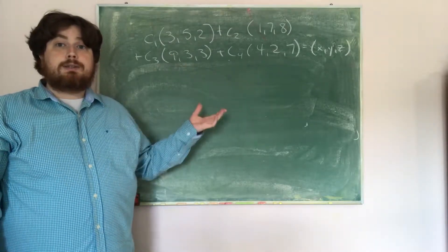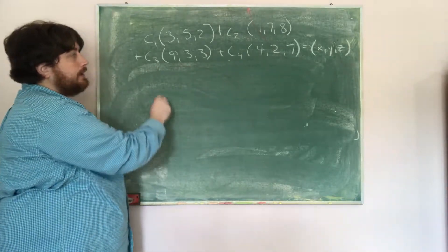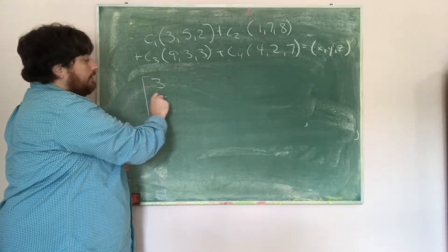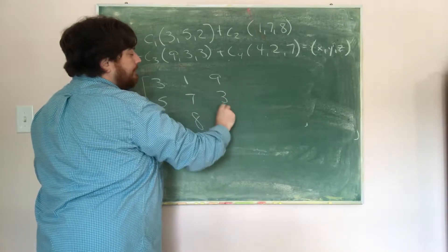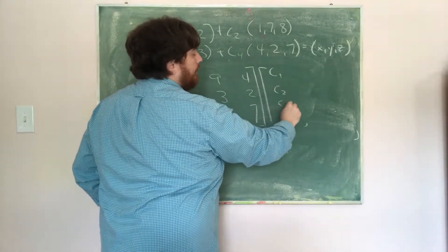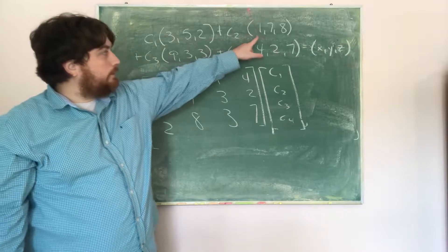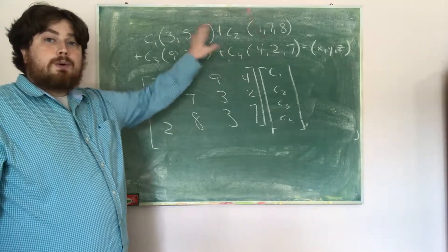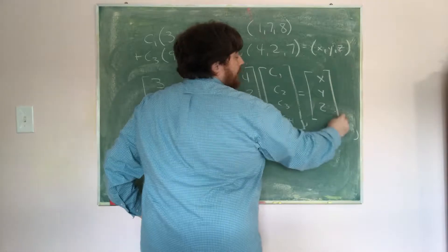So if we take this equation and turn it into a matrix equation, we turn these vectors into column matrices: the columns are (3, 5, 2), (1, 7, 8), (9, 3, 3), and (4, 2, 7). Multiplying that by the vector (C1, C2, C3, C4), we get each of the three components added together, and what we want out is precisely the vector (x, y, z).